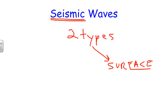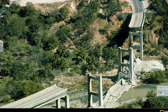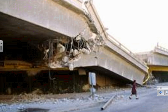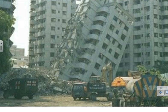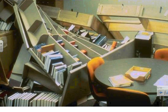The surface waves are the ones that travel on the surface — the ones that knock over buildings and give us the damage we associate with earthquakes. Those buildings we see knocked over in pictures are all caused by surface waves coming from an earthquake.